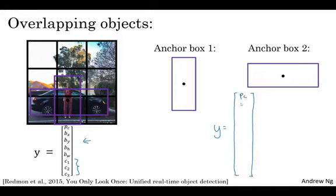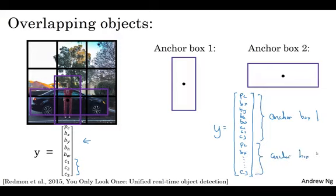So you would have PC, BX, BY, BH, BW, C1, C2, C3. And these are the eight outputs associated with anchor box one. And then you repeat that, PC, BX, and so on down to C1, C2, C3, another eight outputs associated with anchor box two.